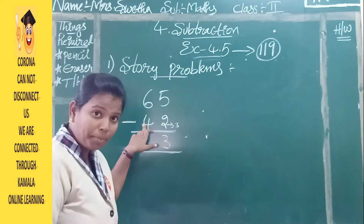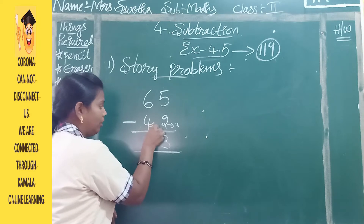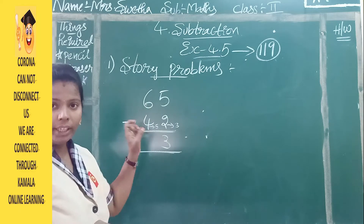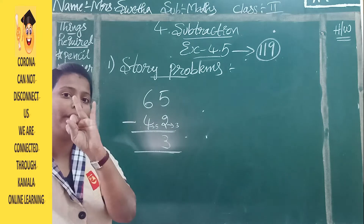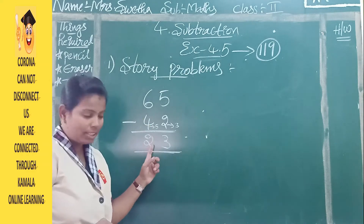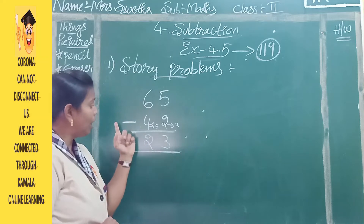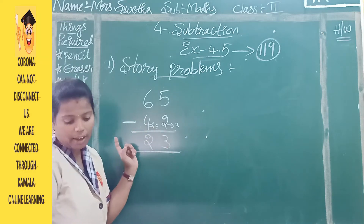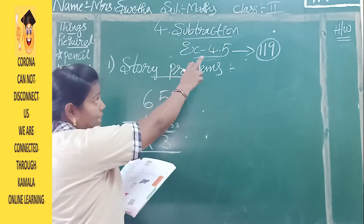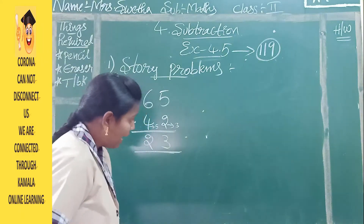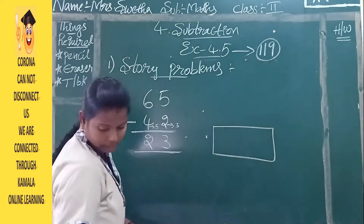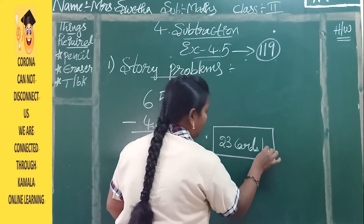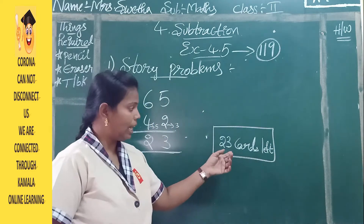Now for the tens place: 6 minus 4. After 4 is 5. Start counting at 5 and stop at 6 — five, six — that is 2 fingers. So 65 minus 42 equals 23. From the total 65 cards, they have made only 42 cards, and 23 more cards they have to make. So, 23 cards are left to be made.